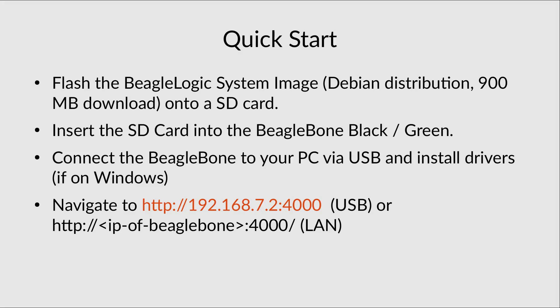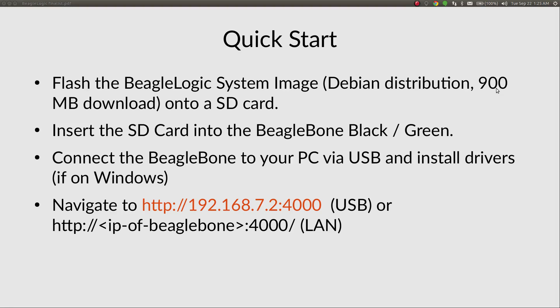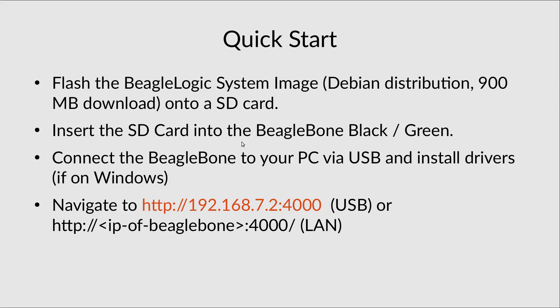For the demonstration, I flashed the BeagleLogic system image — a custom Debian distribution for the BeagleBone Black. It is a 99-megabyte download that can be flashed onto an SD card. You insert that SD card into your BeagleBone Black and boot from it. Install drivers if you are on Windows or Mac; on Linux no drivers are required. Then navigate to the BeagleLogic URL for the web interface, or if your BeagleBone is on the network, go to its IP address at port 4000.